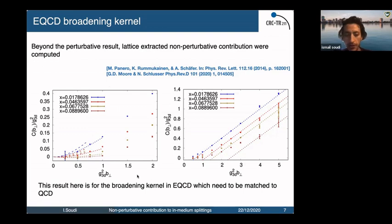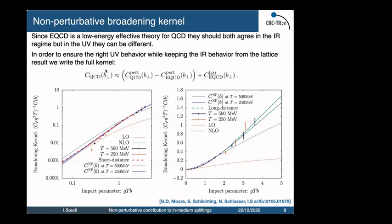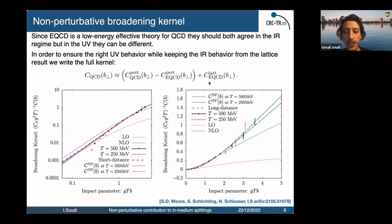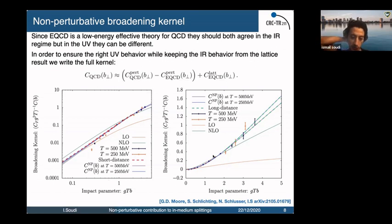In 2020, continuum-extrapolated results for the broadening kernel in EQCD on the lattice were obtained. However, this result is for the broadening kernel in EQCD, which is not exactly the broadening kernel in QCD — because EQCD is a low-energy effective theory, they agree in the infrared regime but can differ in the ultraviolet. So we employ a matching to extract the infrared behavior from the lattice and supply the right ultraviolet behavior from perturbative QCD, obtaining the fully matched broadening kernel results at 500 MeV and 250 MeV temperature.